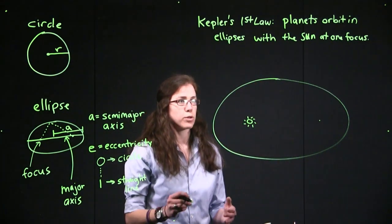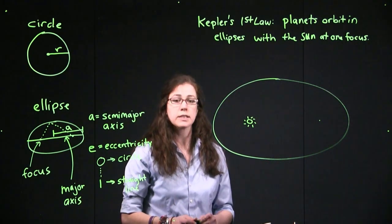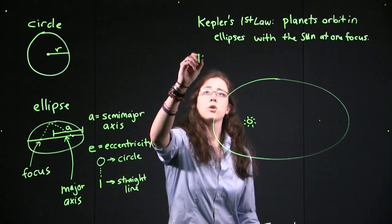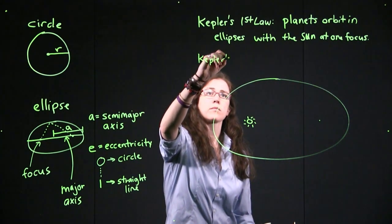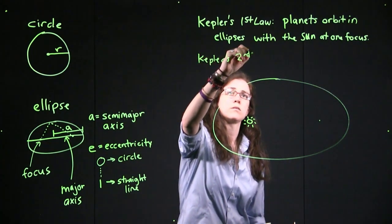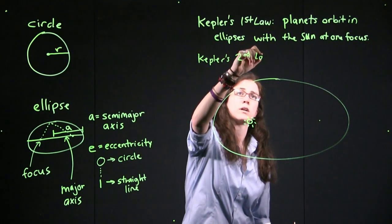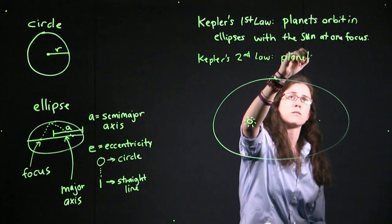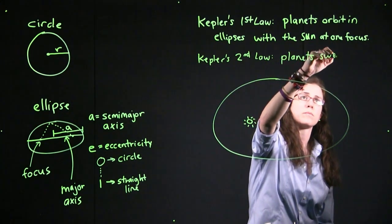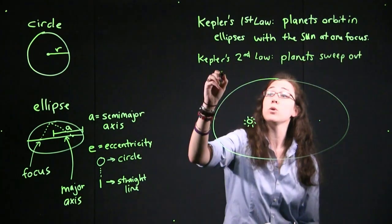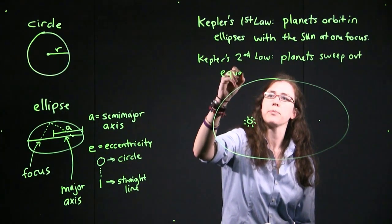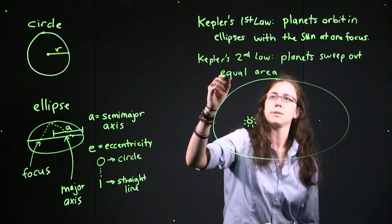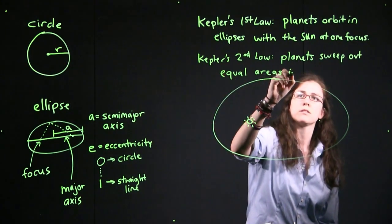The really important part of Kepler's laws is Kepler's second law. And that's the one that really matters to us. Kepler's second law is that planets sweep out equal areas in equal time. And that's what we want to make sure that we understand in today's Deeper Look. Equal areas in equal time.